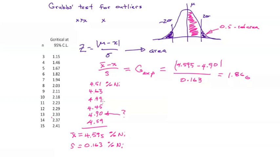This data set has six members in it. So six observations corresponds to a table value of 1.82. And we see that's less than the experimental value.